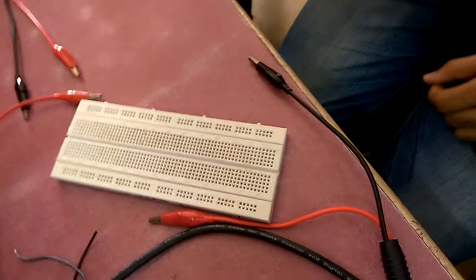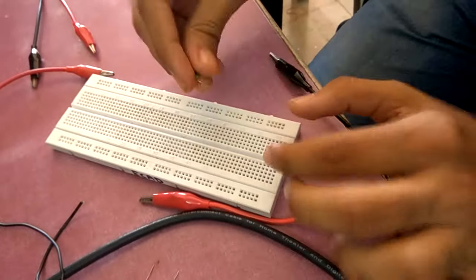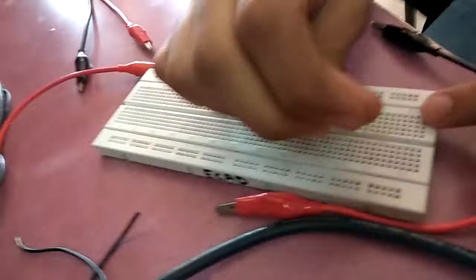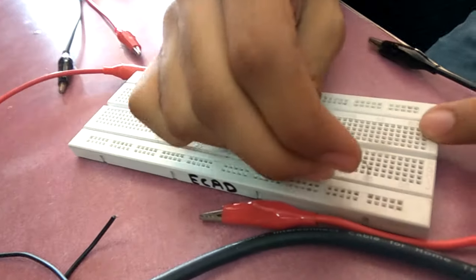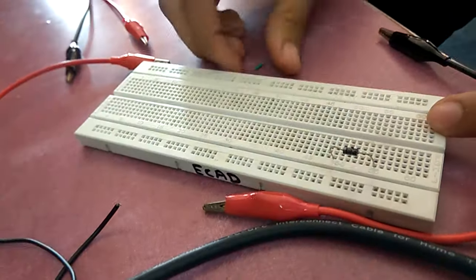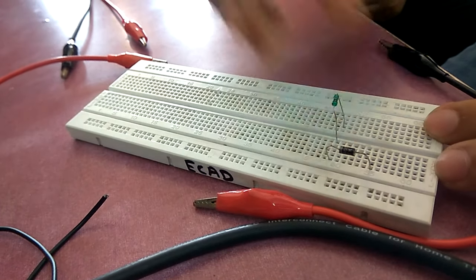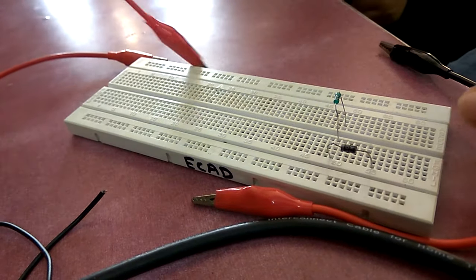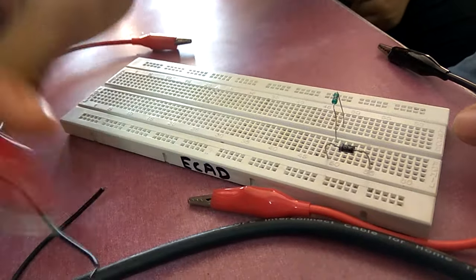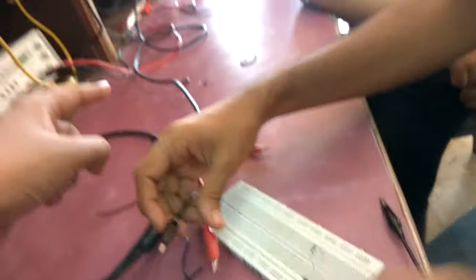Okay, so the circuit for today is the first experiment of clippers. We have a series diode which is parallel with the source. Now the source is from a function generator. So our source is basically these function generator probes which are connected to function generator.